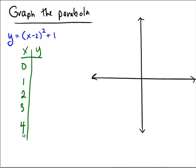What do I get when I stick in the number 2? Well, 2 minus 2 is 0, 0 squared is 0, and 0 plus 1 is 1, so I get the value of (2,1).